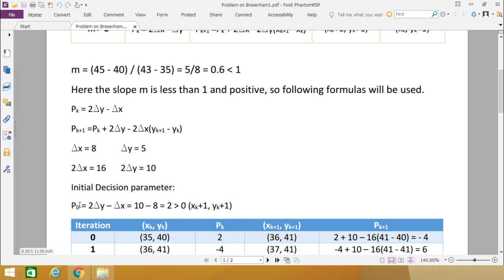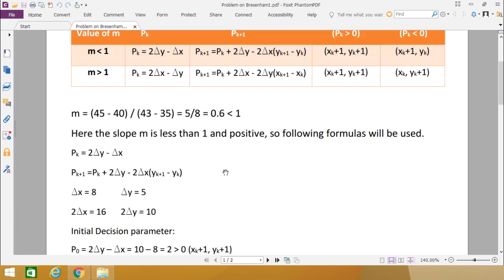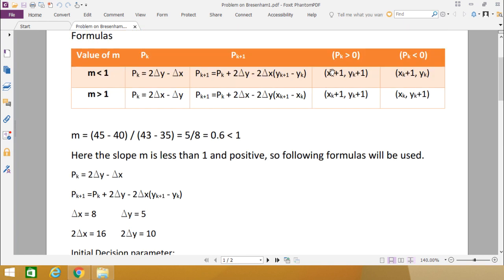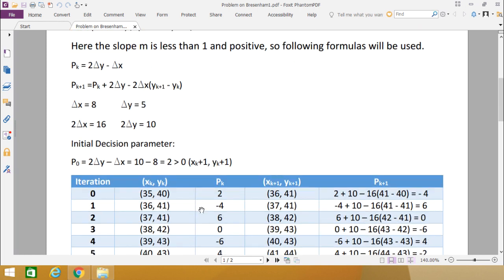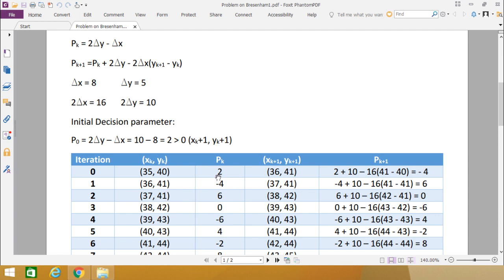At first we are going to calculate the initial decision parameter p0. To get p0, it is 2·delta y - delta x = 2×5 = 10 - 8 = 2, and that is greater than 0. If pk is greater than 0, then the next coordinate will be xk+1 and yk+1. Initially we are having this 2, so the next coordinate will be xk+1, that is 36, and yk+1, that is 41.